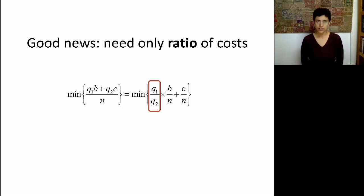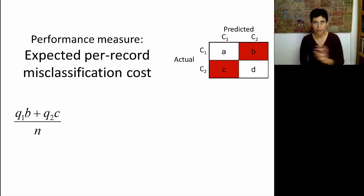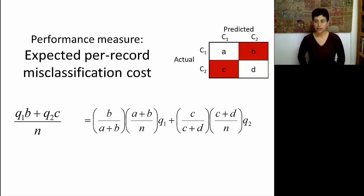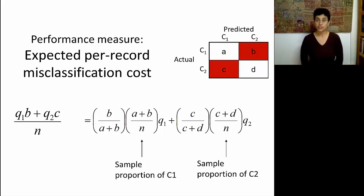We can actually take this expected cost and write it out in a slightly more expanded form that tells us something interesting about what's going to affect this overall cost. So I'm going to write it out in a simple form that simply multiplies and divides by the same number, A plus B here, and C plus D right there. And what we get here is quite interesting. Aside from the costs Q1 and Q2, A plus B over N is the proportion of C1 members in our sample, and similarly C plus D over N is the sample proportion of C2. This means that our performance measure, remember this is the expected per-record misclassification cost when we go and deploy this on new data, it's going to depend on the breakdown of classes that we have in our training data, or validation data if we're computing this on the validation data.